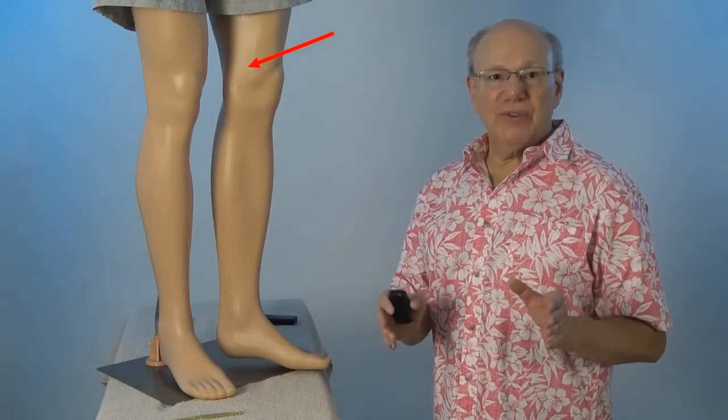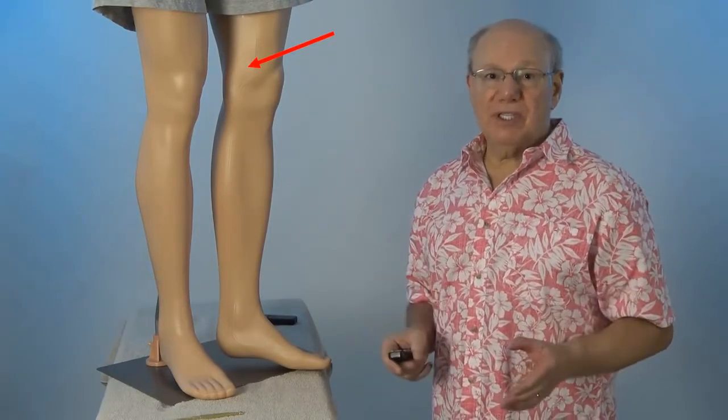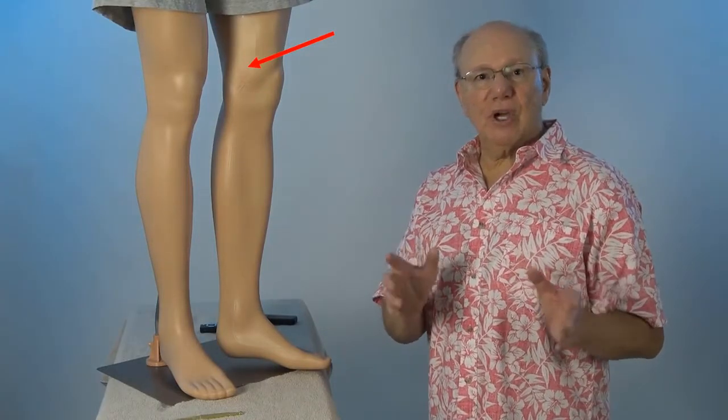To locate Spleen 10, put your finger on the inside of your right knee. Now you move your fingers up until you come off the bony joint. You will be in an area of soft tissue.